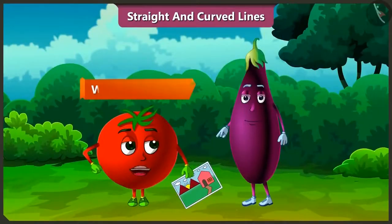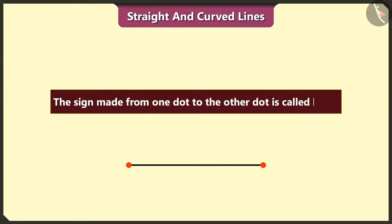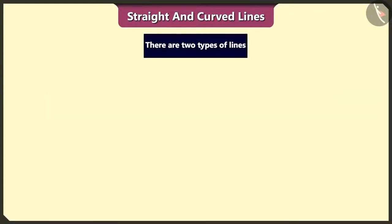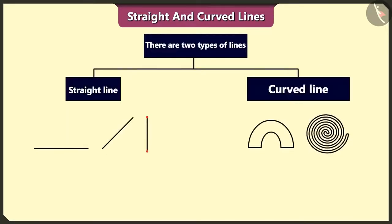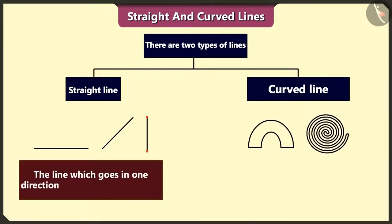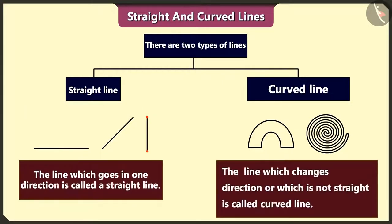But Bingu, what is this line? The sign made from one dot to another dot is called a line. There are two types of lines: straight line and curved line. The line which goes in one direction is called a straight line, and the line which changes direction or which is not straight is called a curved line.